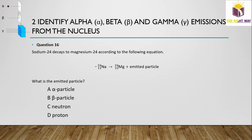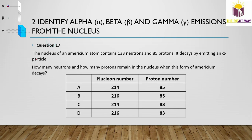Question 16: Sodium-24 decays to Magnesium-24 as: ²⁴₁₁Na → ²⁴₁₂Mg. A beta particle is emitted because the atomic number increases by one from 11 to 12, while the mass number remains 24.